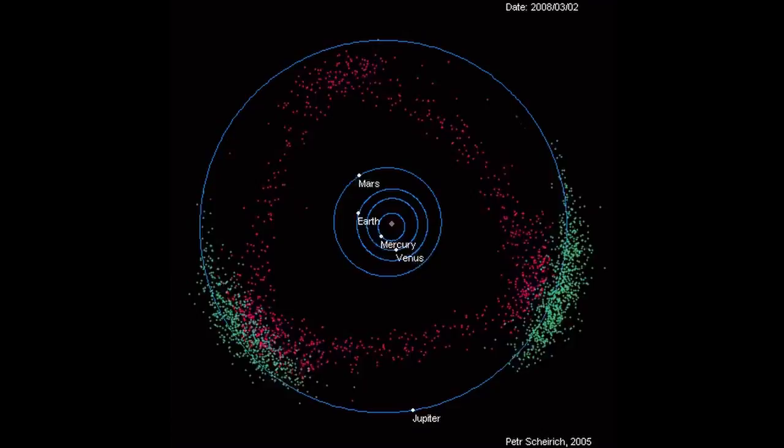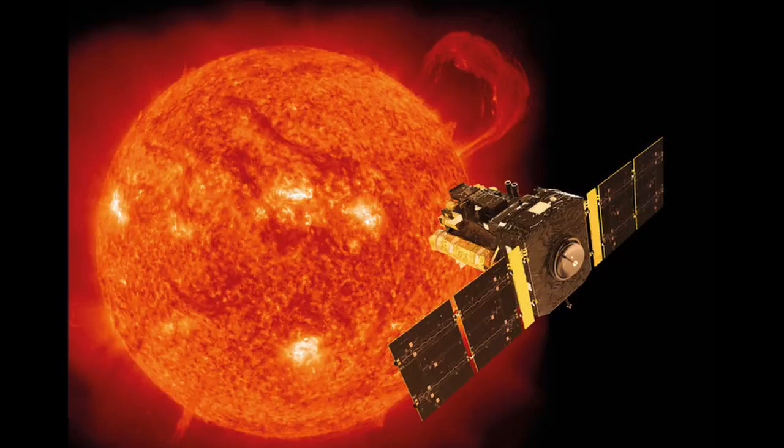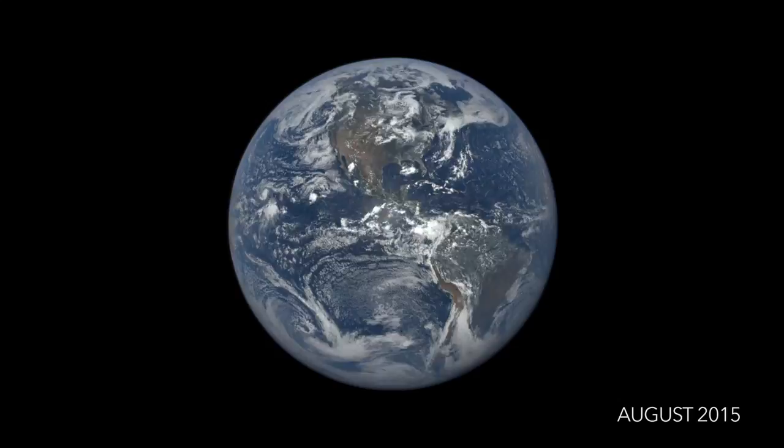Lagrange points are very useful for some space missions. NASA's SOHO probe has been placed at Earth's L1 point, where it gets an uninterrupted view of the Sun without straying too far from the Earth. The Discover satellite is also at L1, but pointing the other way so that it gets an uninterrupted view of the daytime side of the Earth.